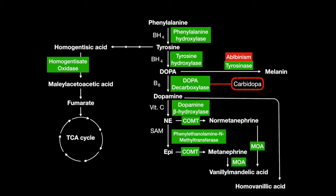A deficiency of phenylalanine hydroxylase causes PKU, or phenylketonuria, because phenylalanine can't be broken down and will stay in the blood. A deficiency in homogentisate oxidase results in alkaptonuria, a condition in which homogentisic acid builds up in the body. Finally, norepinephrine's conversion into epinephrine by phenylethanolamine N-methyltransferase is stimulated by cortisol. That's all for this lesson of the Step 1 Review. We'll see you in the next video.